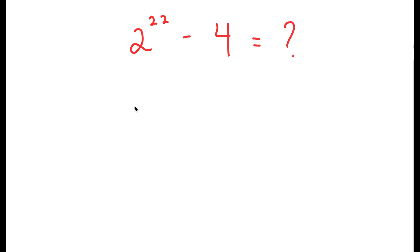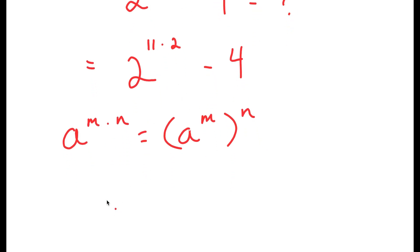So to first start, I'm going to write this as 2 to the power of 11 times 2 minus 4. And the reason I did this is because if I have something in the form a to the power of m times n, then this is equal to a to the power of m to the power of n. So 2 to the power of 11 times 2 is going to turn into 2 to the power of 11 to the power of 2, and I have this minus 4.